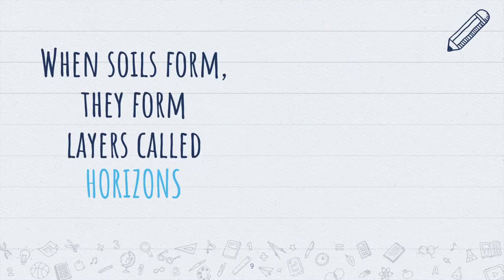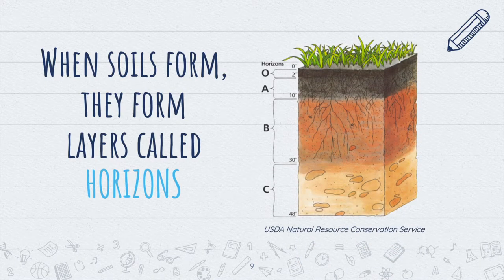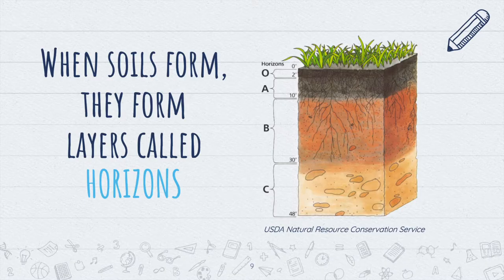When soils form, the layers they form are called horizons. In most cases, the parent material is shown on the bottom, and the soil forms on top of it. In this drawing, the letter C is referring to the parent material of this soil profile. Parent material is the foundation, and some properties of the parent material can influence properties of the horizons above it. There are additional factors that influence how we get to have all these horizons.